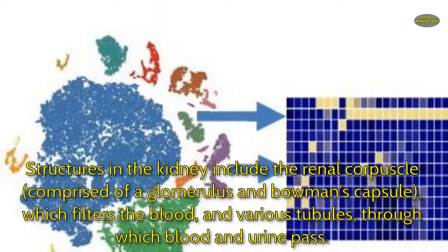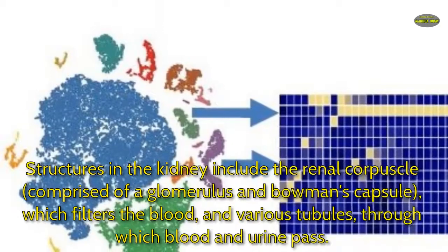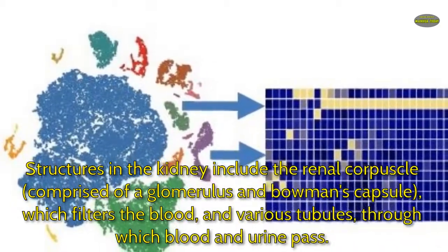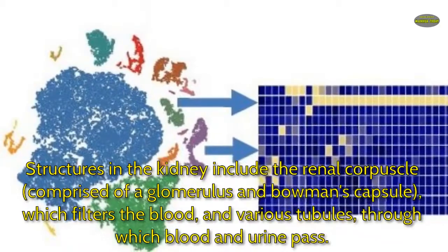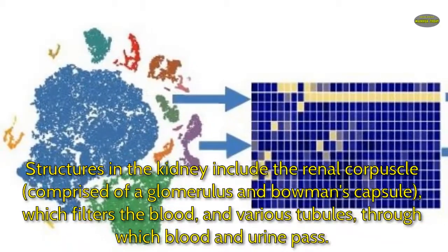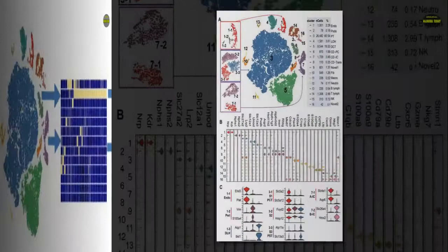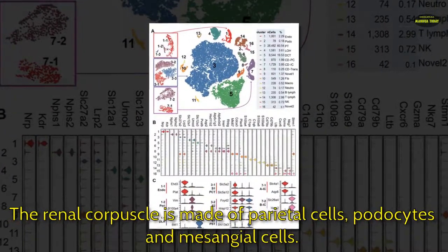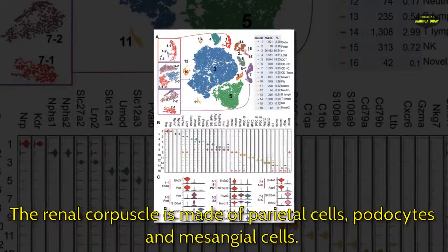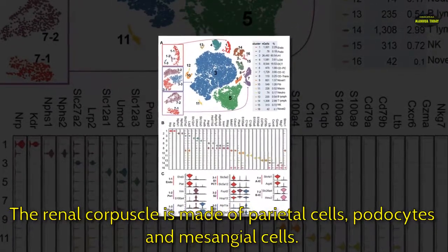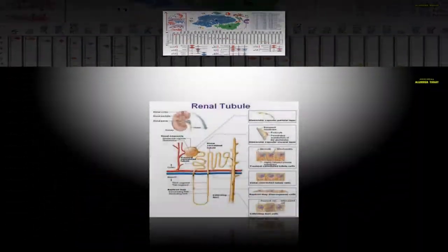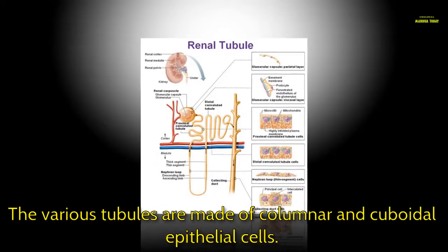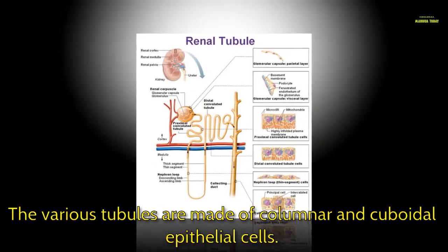Structures in the kidney include the renal corpuscle, comprised of a glomerulus and Bowman's capsule, which filters the blood, and various tubules through which blood and urine pass. The renal corpuscle is made of parietal cells, podocytes, and mesangial cells. The various tubules are made of columnar and cuboidal epithelial cells.